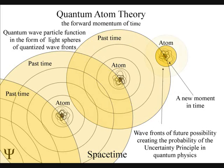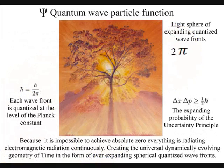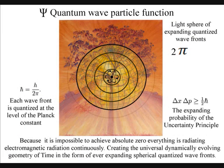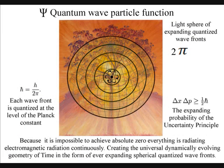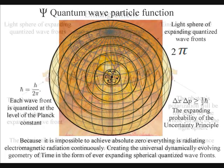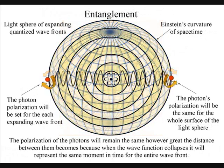Light moves in straight lines, but in three-dimensional space it will expand out in all directions, forming light spheres. The polarization of the light will be the same for the entire surface of the light sphere, creating quantum entanglement and the symmetry and geometry of spacetime.